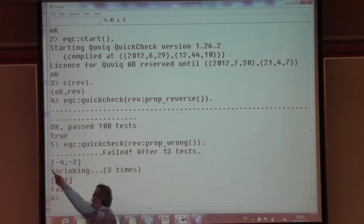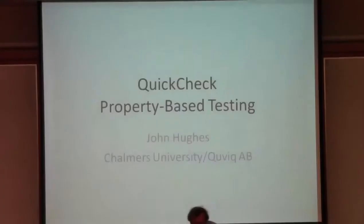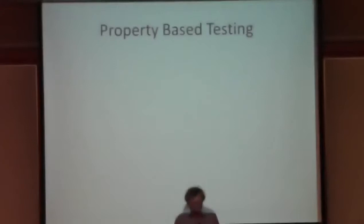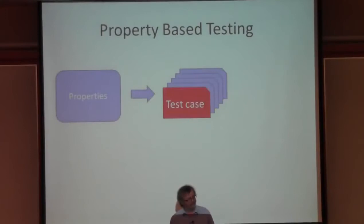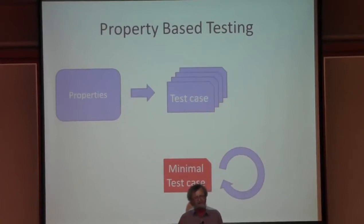First you see a randomly generated case, and then it shrinks and we end up with a minimal failing test case. This is what QuickCheck does: we start off with properties, we generate a lot of test cases from them, and we run the tests until one fails. At which point, we take that test case and we search for a similar, smaller test case that also fails, ending up with some kind of minimal example.